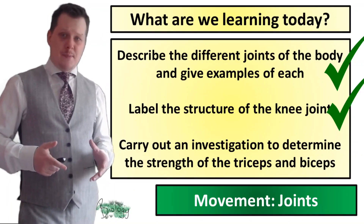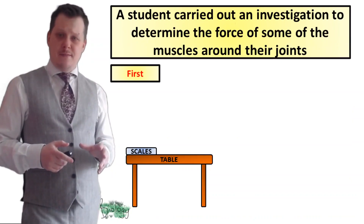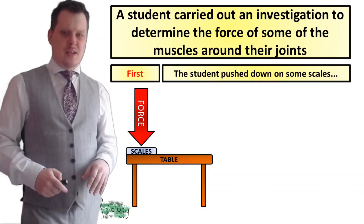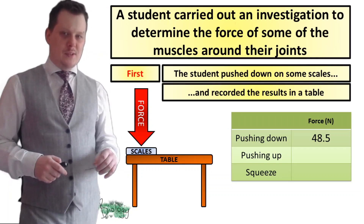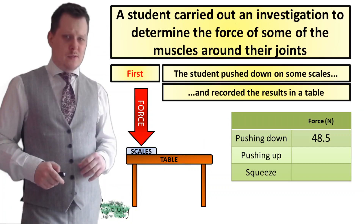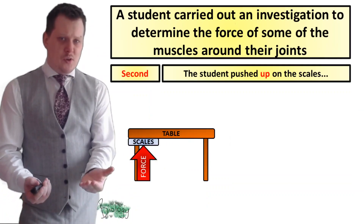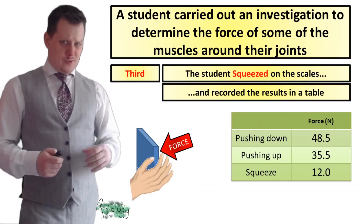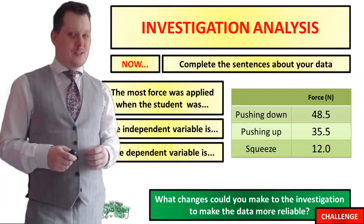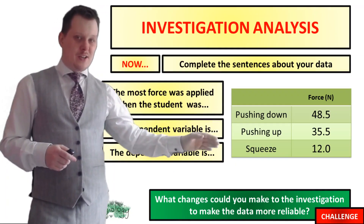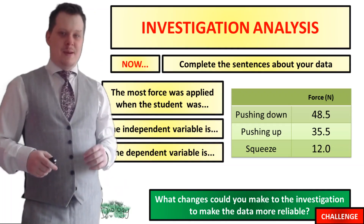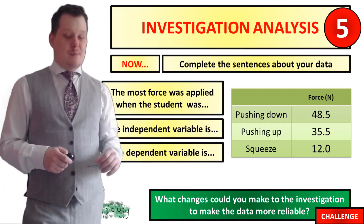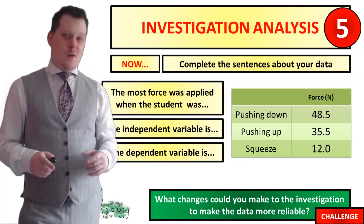Now we're going to look at some data to determine the strength of the triceps and biceps. A student carried out an investigation to determine the force of some muscles around their joints. First they pushed down on a set of scales, recording a force of 48.5 newtons. Next they put the scales under a table and pushed up, then recorded that result. Finally they squeezed the scales and recorded that result. Use the data in the table to complete three sentences, and for a challenge consider what changes you could make to make this investigation more reliable. Pause if you need more time.